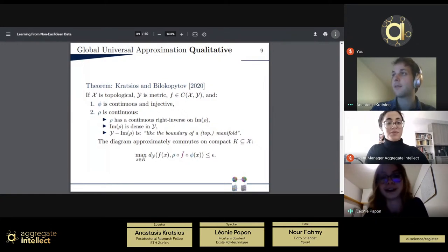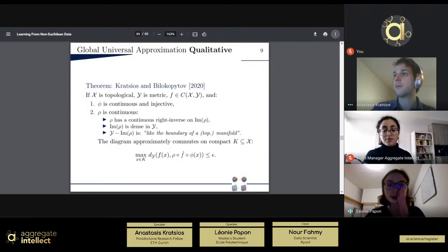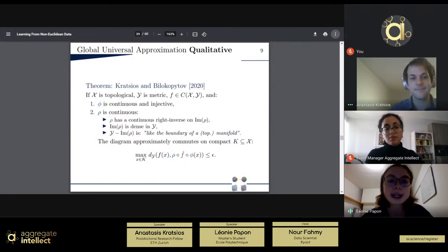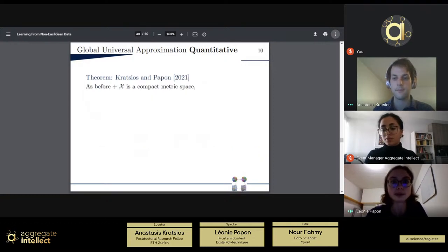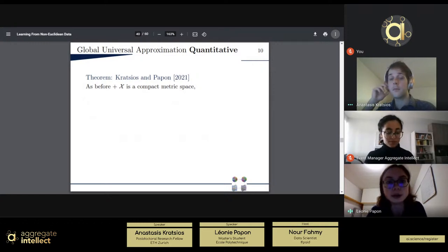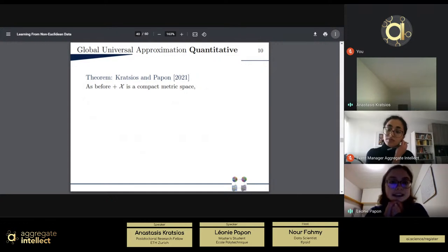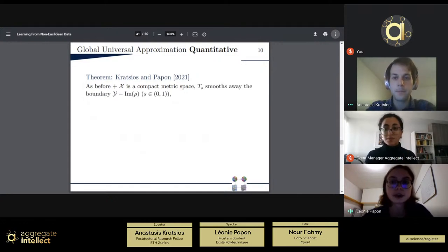So this is the slide where Anastasis left us. And now we are going to move on to a more on a refinement of this theorem. And what I mean by refinement is that we are going to see a more quantitative results dealing with universal approximation. So in this case, we have the same assumption as before. So our space is X and Y, our maps of phi and rho, with the same assumptions on the image of rho. But in addition, we assume that the metric space X is compact.